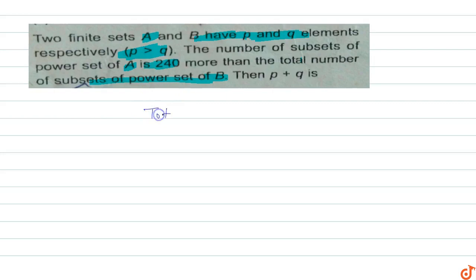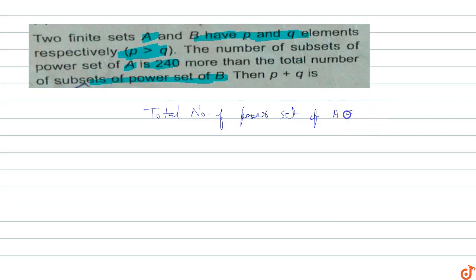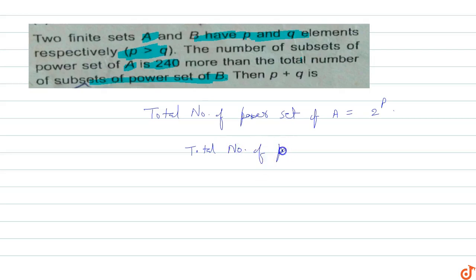The total number of subsets of the power set of A equals 2^P, and the total number of subsets of the power set of B equals 2^Q. Given that the total number of subsets of the power set of A is 240 more than the total number of subsets of the power set of B.